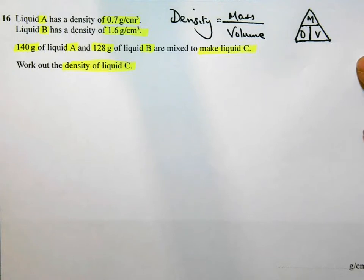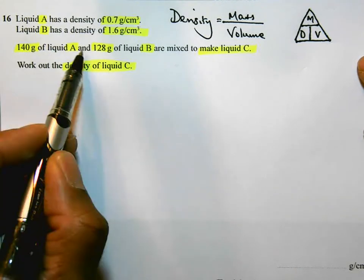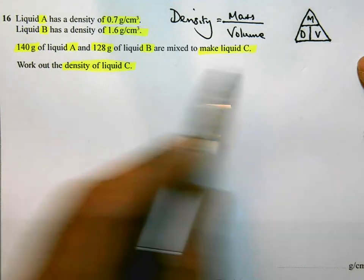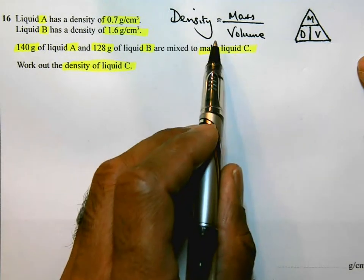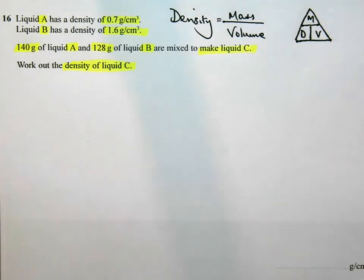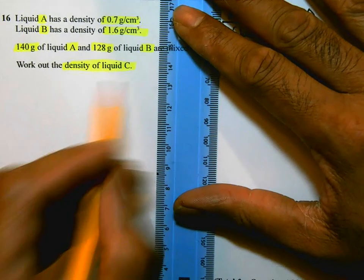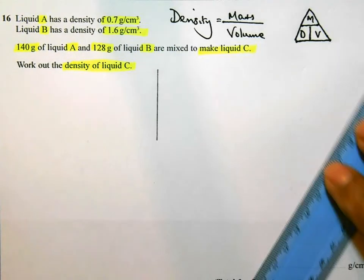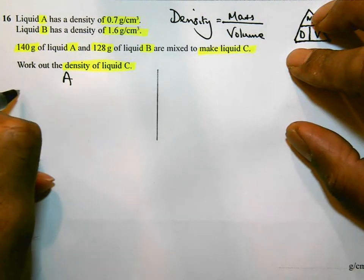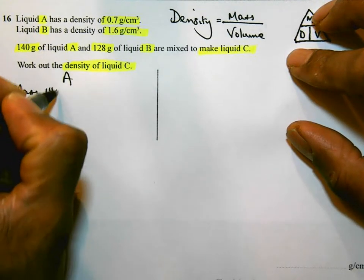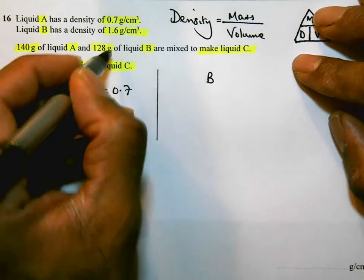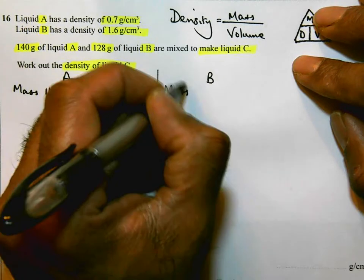We do need to use this because we are given the mass of A, it's 140 grams, the mass of B, 128 grams. We are asked to work out the density of C. So we will use the density formula to work out the density of C, but we need to work out the volume of A and the volume of B for these masses. So I am going to split my page so I can do workings for A and B. For A, I know it has a mass of 140 grams and it has a density of 0.7. For B, I know the mass of the substance I have is 128 grams and it has a density of 1.6.